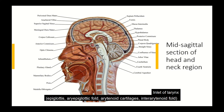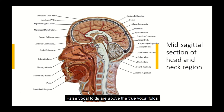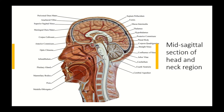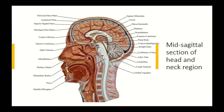Through the laryngeal inlet, we enter the laryngeal cavity. Inside the larynx, there are two types of vocal cords: false vocal cords (vestibular folds) at the top and true vocal cords below. The laryngeal cavity is divided into three parts: the vestibule (from the inlet to the false vocal folds), the ventricle of the larynx (between the false and true vocal folds), and the infraglottic part (below the true cords), which continues as the trachea. Behind the larynx, the laryngopharynx continues as the esophagus.